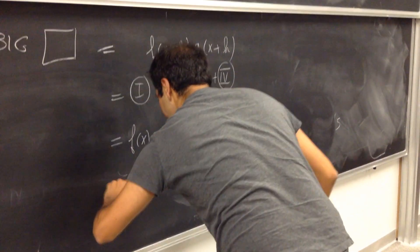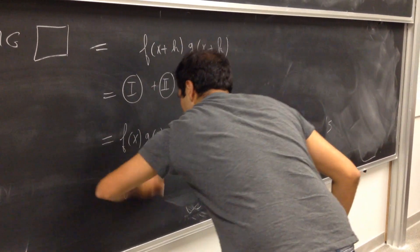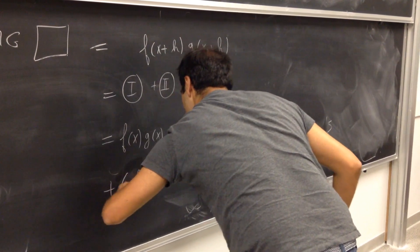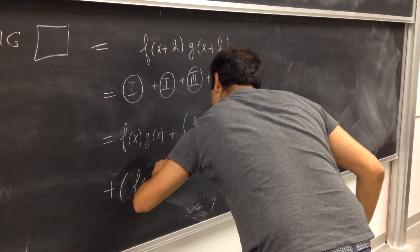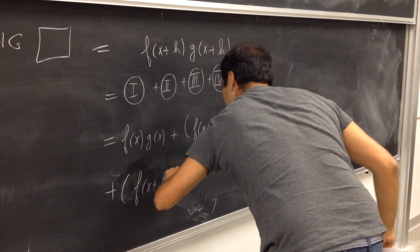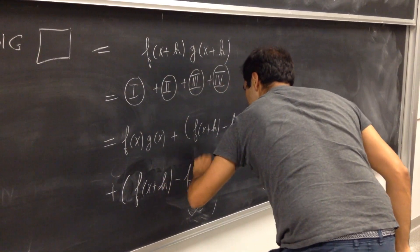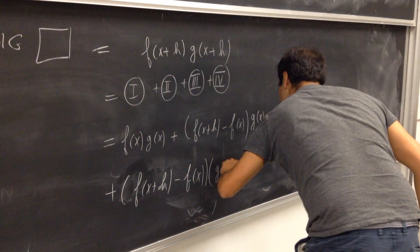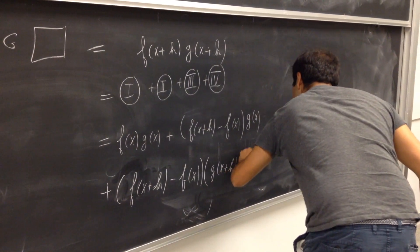So plus f of x plus h minus f of x times g of x plus h minus g of x.